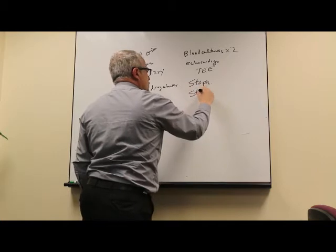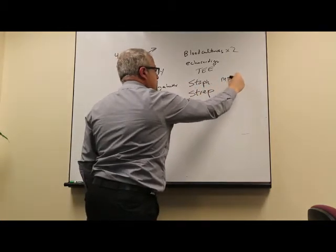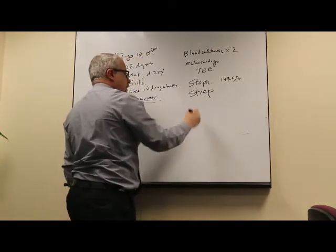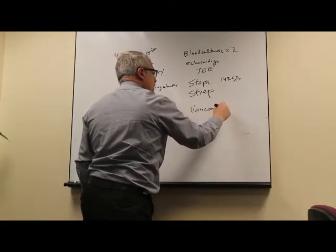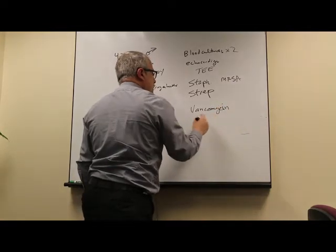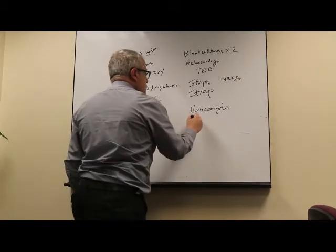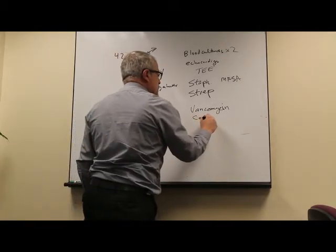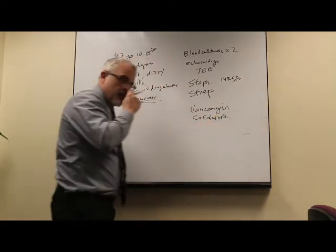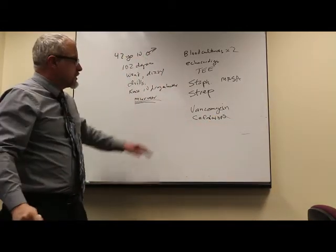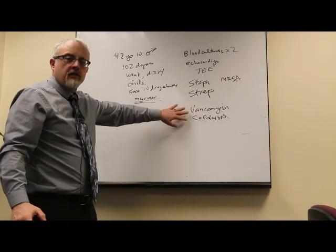We need to cover empirically the likely bugs. So you need to cover staph, you need to cover strep. And really, you can't assume it's methicillin-sensitive staph, so you've got to cover MRSA. So you're going to start with vancomycin. Some people might start ceftriaxone to cover gram-negatives. The point is to know what the likely organisms are in your hospital and cover them.